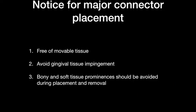When we place the Major Connector, we should notice three important things. First, it should be free of movable tissue. Second, it should avoid gingival tissue impingement. Third, bony and soft tissue prominences should be avoided during placement and removal. Basically, when you place the Major Connector, it should be free from oral tissue and should not disturb the oral environment.